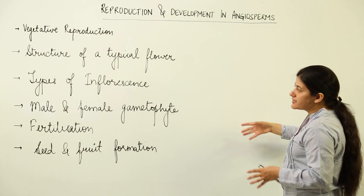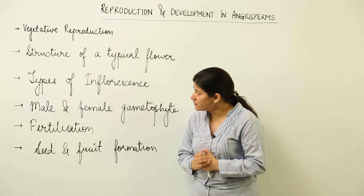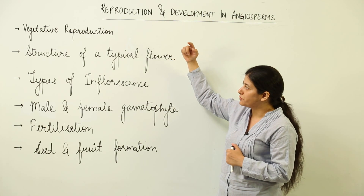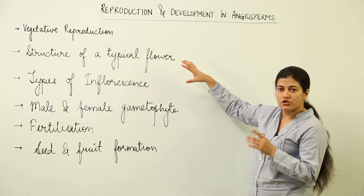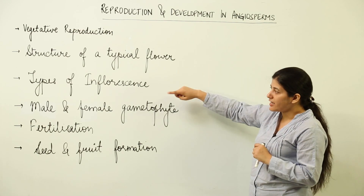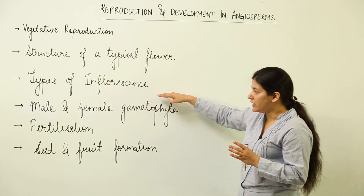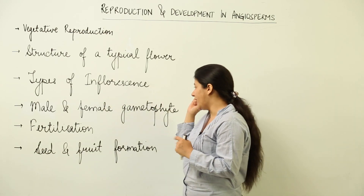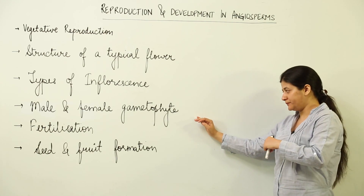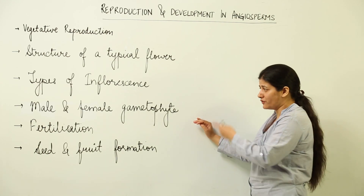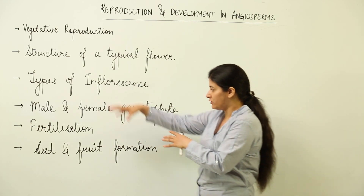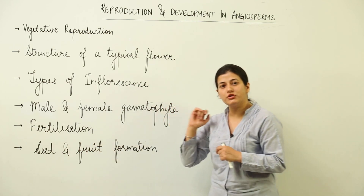The topics we are going to study in this chapter are listed here. First is vegetative reproduction. Second is the structure of a typical flower which contains both male and female parts. Third is the types of inflorescence, dealing with the morphological aspects of the plant. Then male and female gametophyte, bringing us back to reproduction itself. Then fertilization, and lastly the outcome of the entire process — seed and fruit formation.